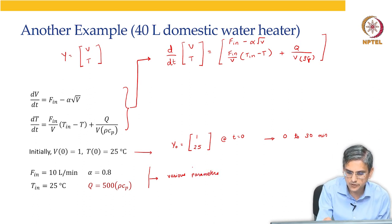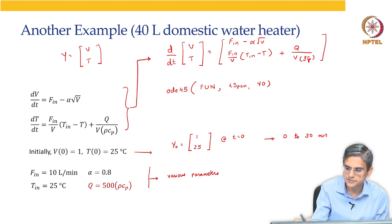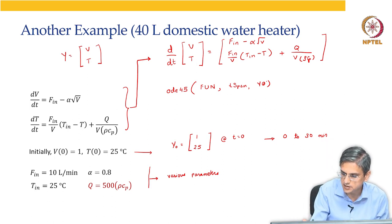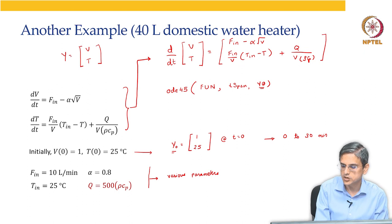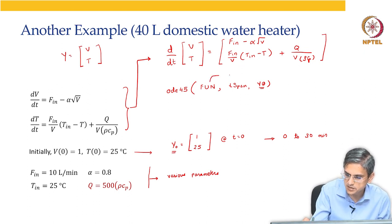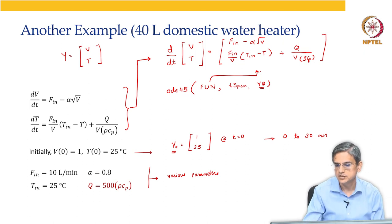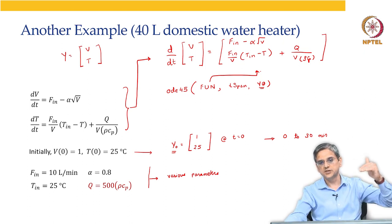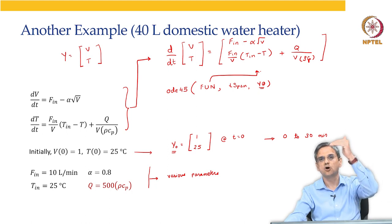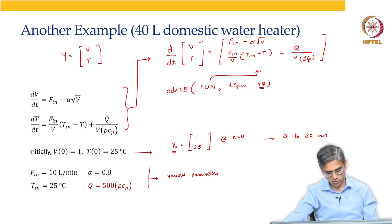In MATLAB, we are going to use ODE 45. What does ODE 45 require? It requires the ODE function, it requires T span and it requires initial condition. The initial condition is what is given, ODE function is this particular equation. Now, you have two variables V and T. Therefore, ODE function should also return a vector that has two rows in it. That is what we have studied so far.